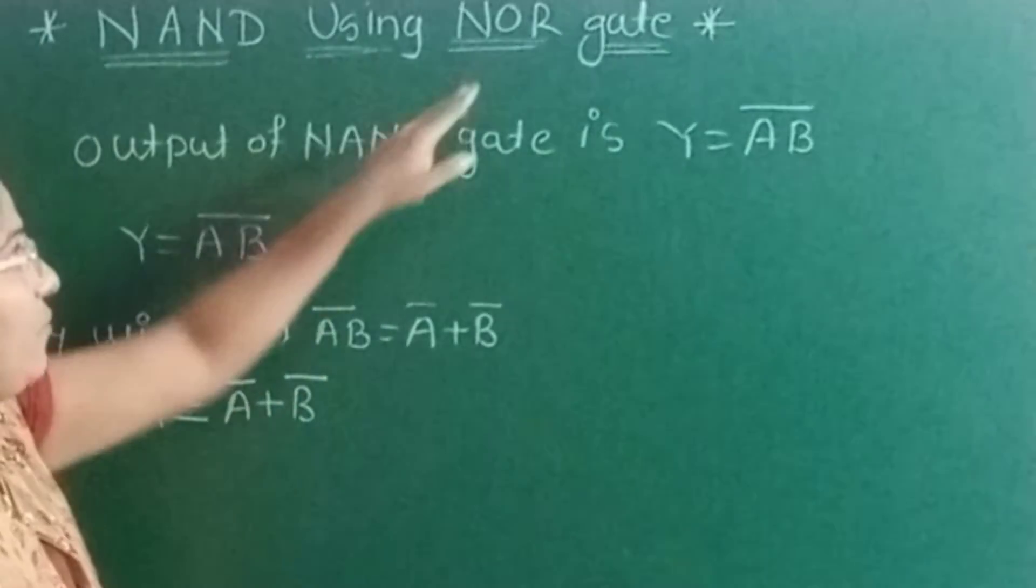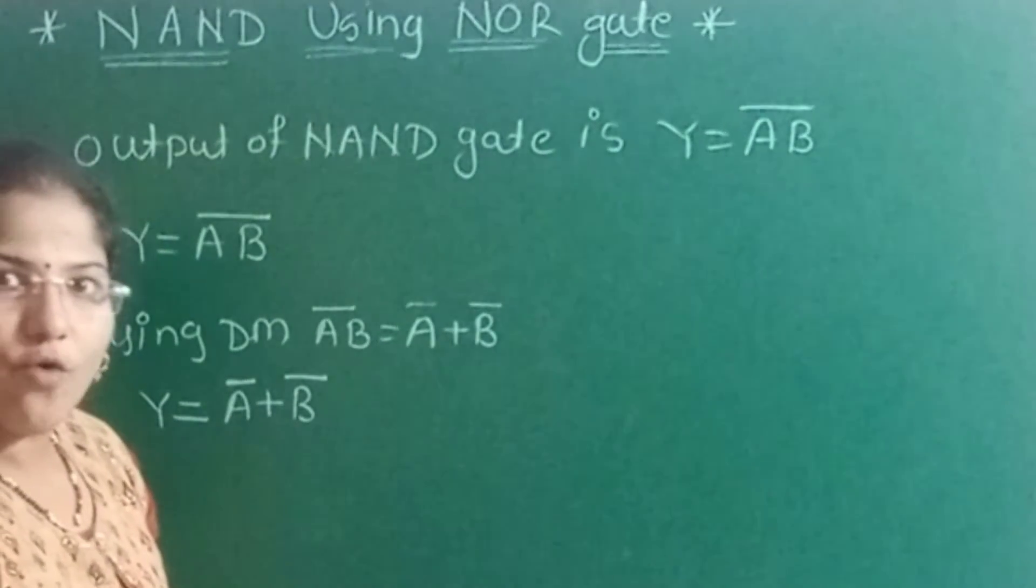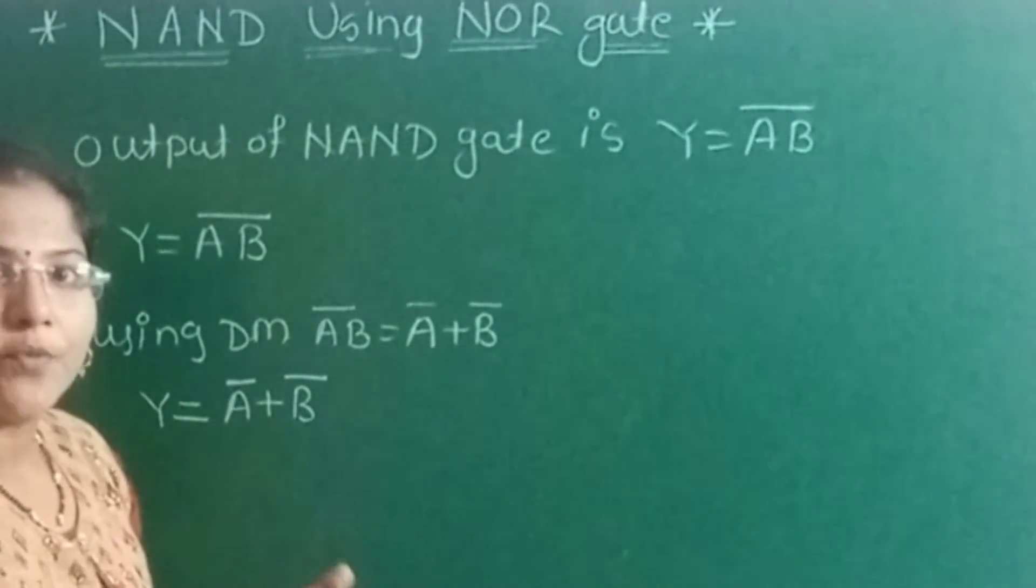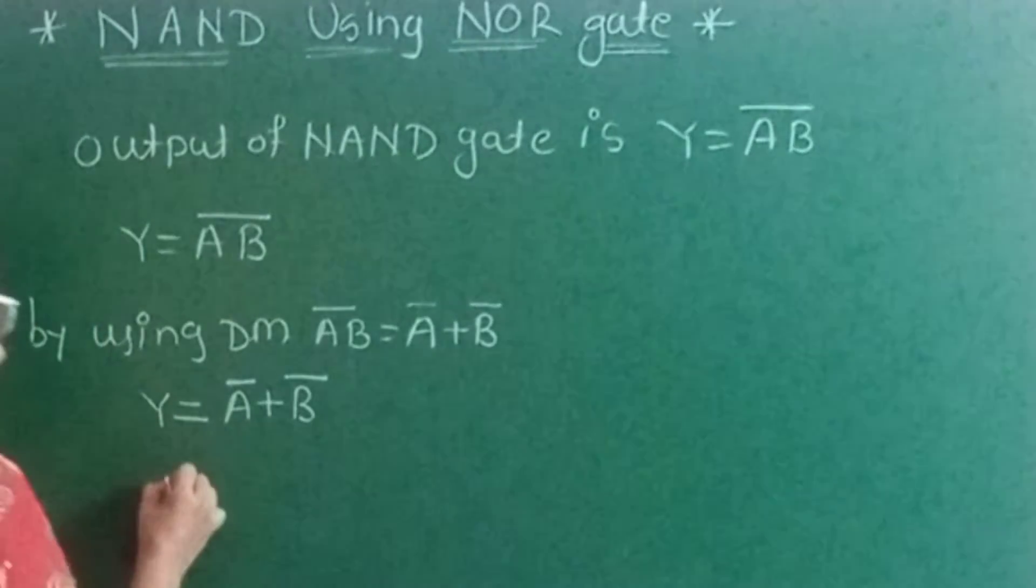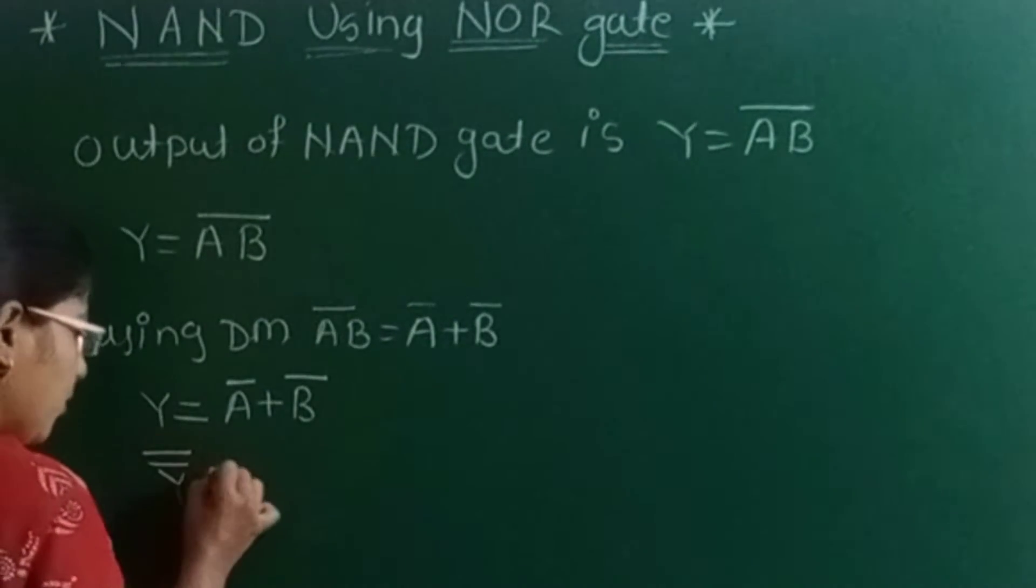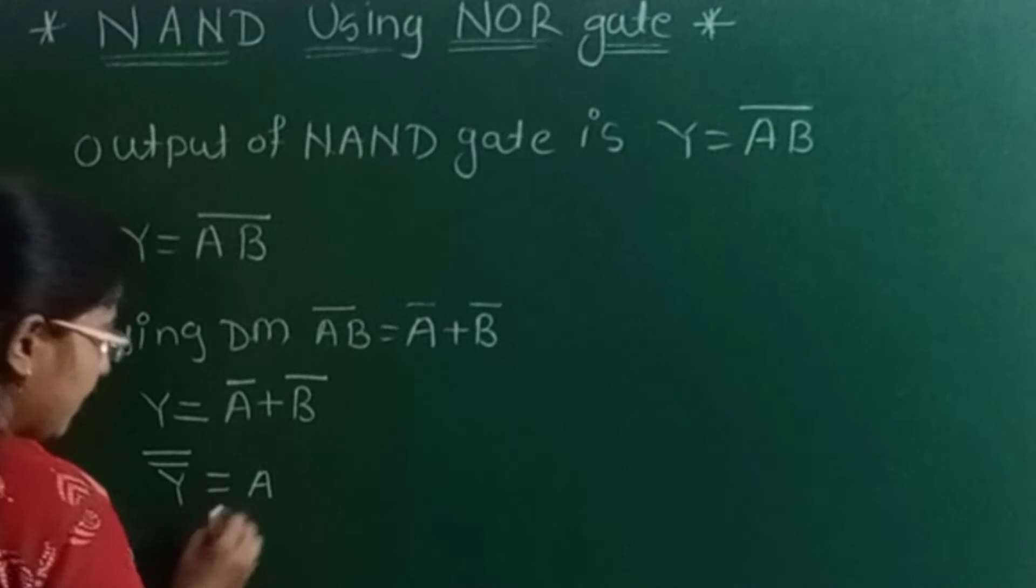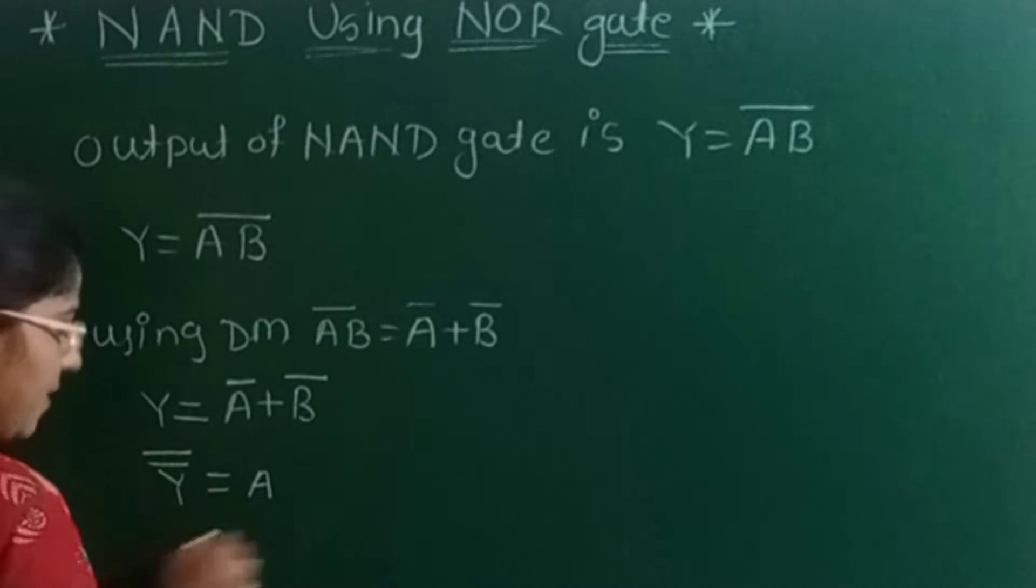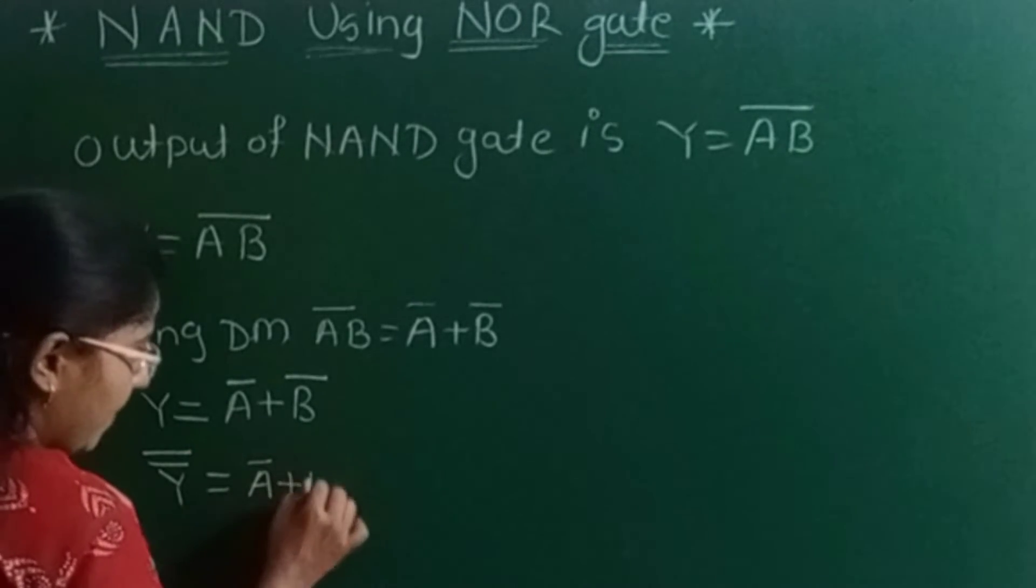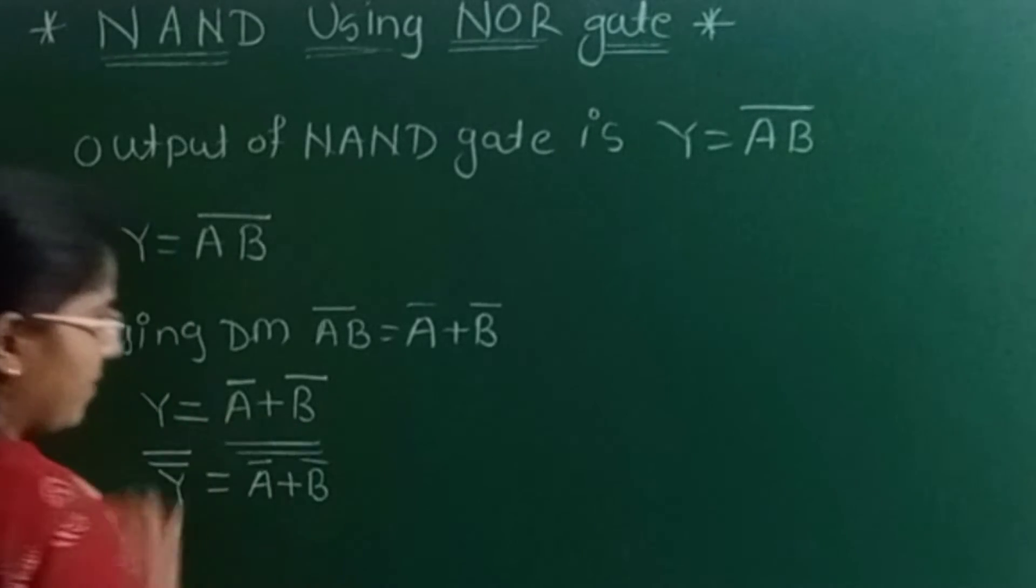But when we use the NOR gate, its output is addition term along with its complement. So I will take the double complement of both sides. This expression will become Y double complement equal to A bar plus B bar double complement.